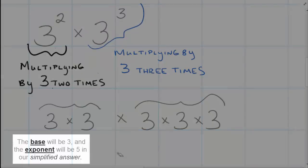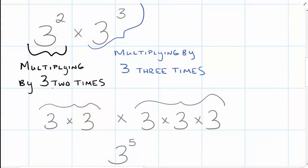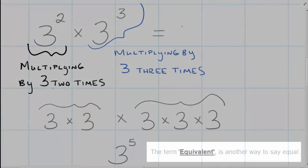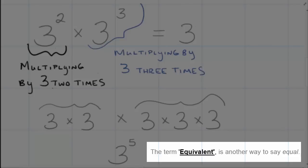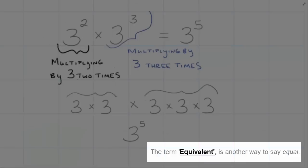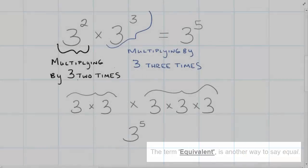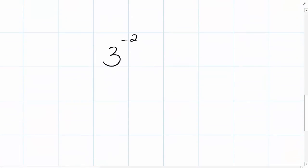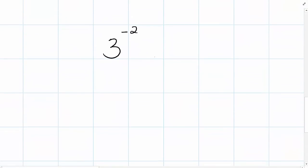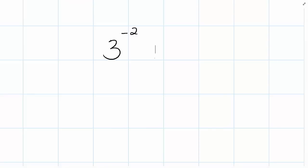So we can use an exponent again, just like we talked about before. This is going to be three to the fifth power. We could say that 3 to the second power times 3 to the third power is equivalent to 3 to the fifth power. Exponents are a piece of cake — oh wait, or are they?